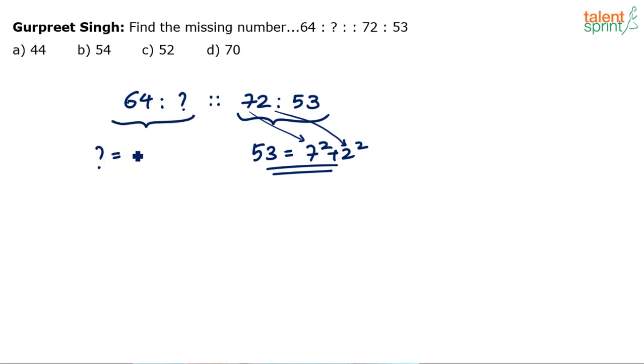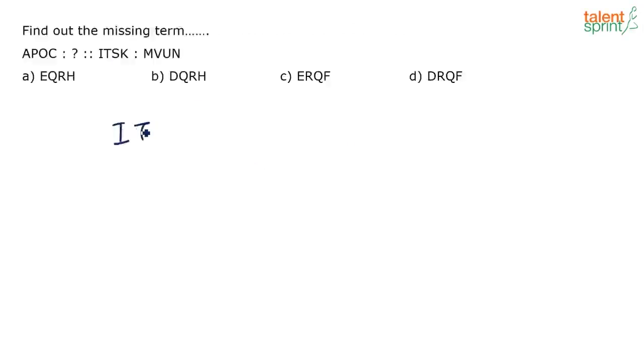If you apply the same logic here, same pattern here, what happens? Question mark should be equal to 6 square plus 4 square. 6 square is 36 and 4 square is 16, 36 plus 16 is 52. So this should be equal to 52. I think this logic works, this logic really works in getting the answer. There should not be any confusion.